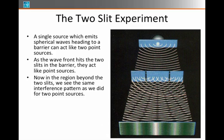In the region beyond the two slits, we'll see a similar interference pattern as we did for two point sources, crests and troughs overlapping, and we'll have nodal lines and antinodal lines.